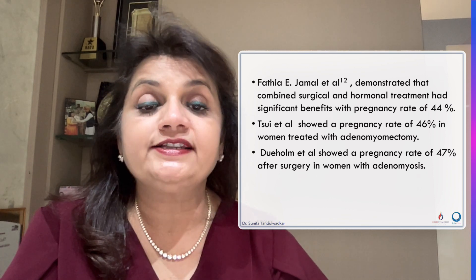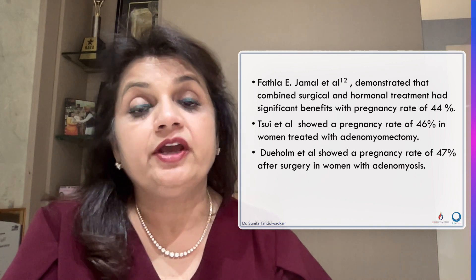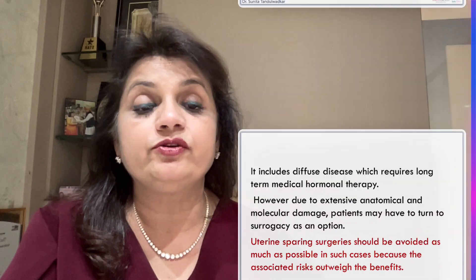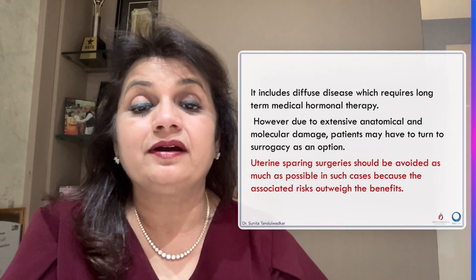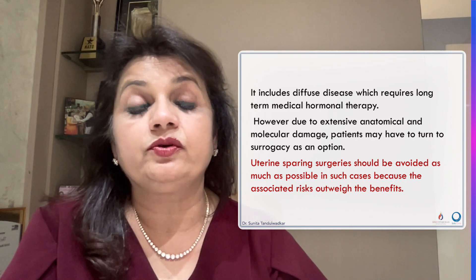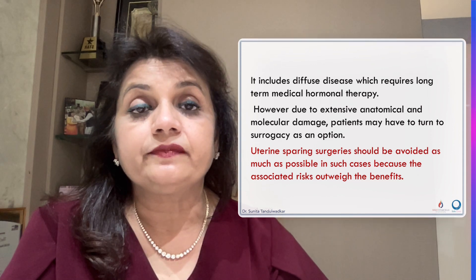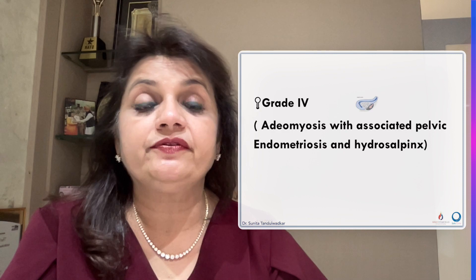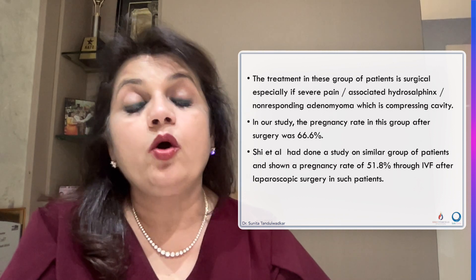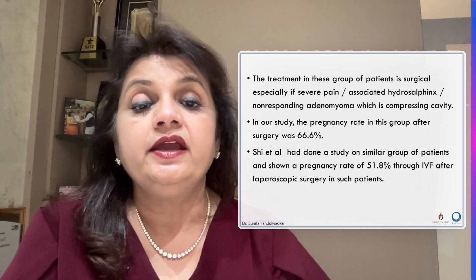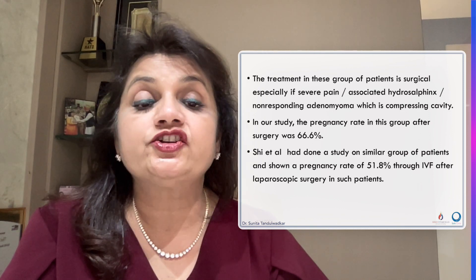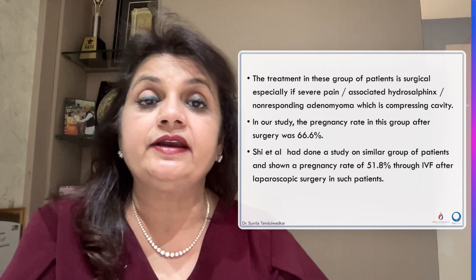Tissui showed a pregnancy rate of 46% in women treated with adenomyomectomy. Grade 3 diffuse adenomyosis needs long-term medical hormonal therapy; however, due to extensive anatomical and molecular damage, the patient may need to consider surrogacy as an option. Grade 4 — adenomyosis associated with pelvic endometriosis and hydrosalpinx — treatment in this group is surgical if severe pain, hydrosalpinx, or non-responding adenomyoma is compressing the cavity. In our study, the pregnancy rate was 66%. She et al. conducted a study on a similar group and showed a pregnancy rate of 51.8% through IVF after laparoscopic surgery.